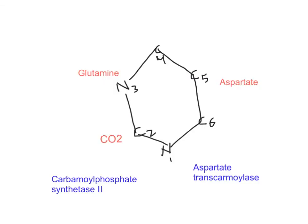Now let's move to the pyrimidine ring. The pyrimidine ring has six atoms: nitrogen 1, carbon 2, nitrogen 3, carbon 4, carbon 5, and carbon 6.